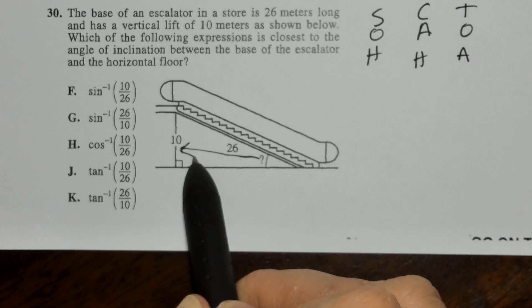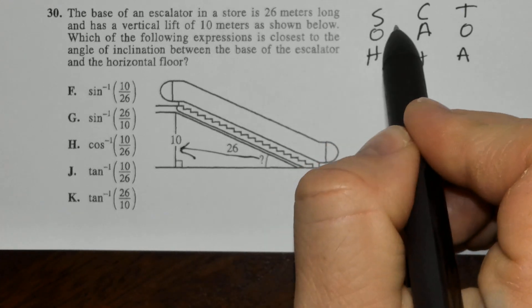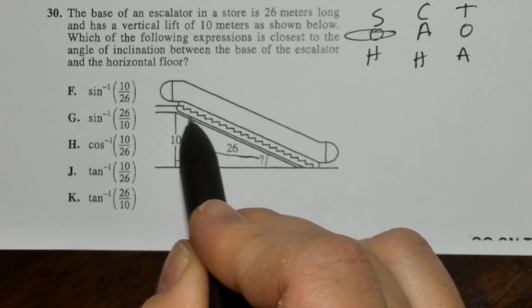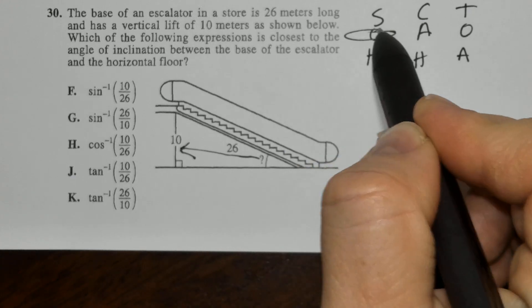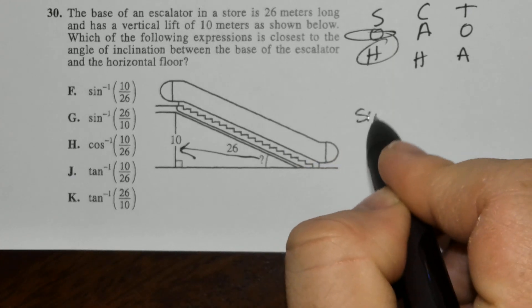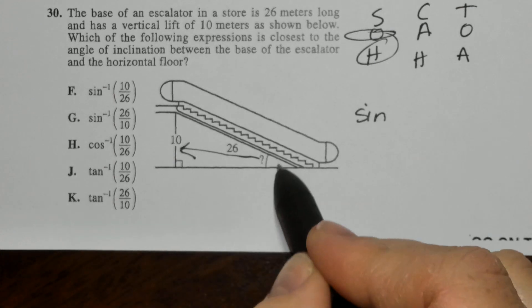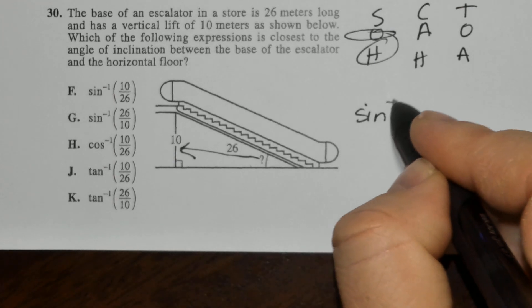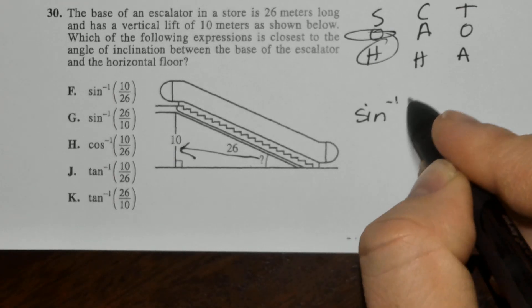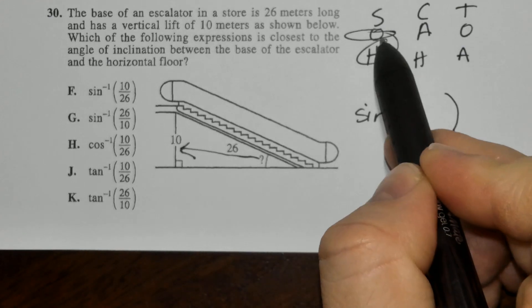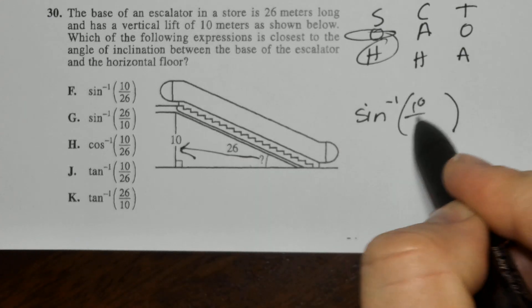And 26 represents the length of the hypotenuse of the right triangle. So, I'm working with the sine function. Again, we can find the angle measurement using inverse trig functions. So, sine is opposite, 10 over 26, and our correct answer is F.